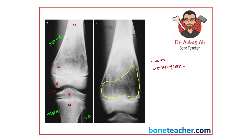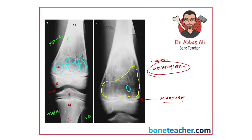One very important finding: the growth plates are open, so this is a young child or an immature skeleton. So here you have a metaphysial lucent lesion in an immature skeleton. Looking at this lucent lesion more closely, you can see loculations — a multi-loculated, multiple cyst-like lesion.